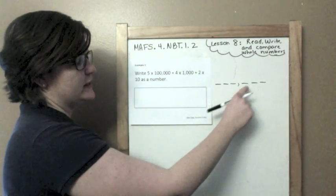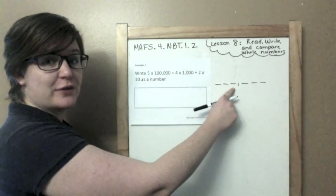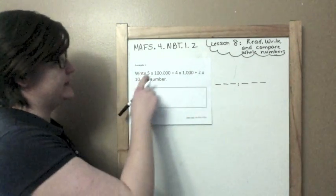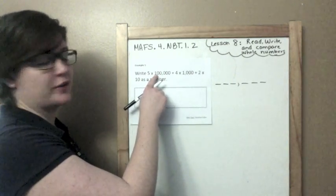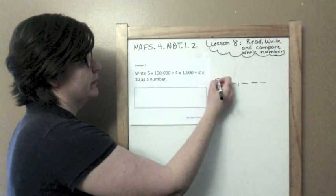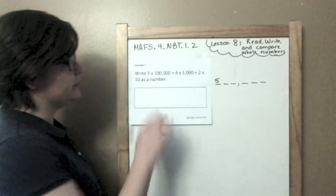So I'm going to make digits: ones, tens, hundreds, comma, thousands, ten thousands, hundred thousands. And it says 5 is in the 100,000s place, while the 100,000s place is right here. Five, okay.